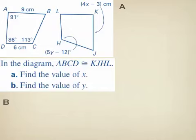The next example gives us quadrilaterals ABCD and KJHL. The diagram tells us that ABCD is congruent to KJHL. Order matters: because A is the first letter of the first quadrilateral, A corresponds to K, B is congruent to J, C is congruent to H, and D is congruent to L.